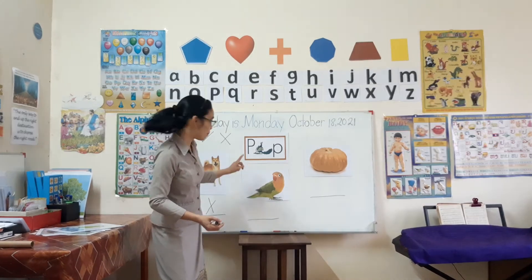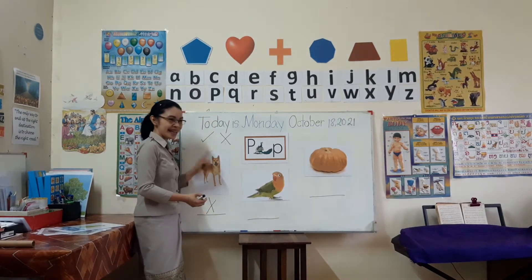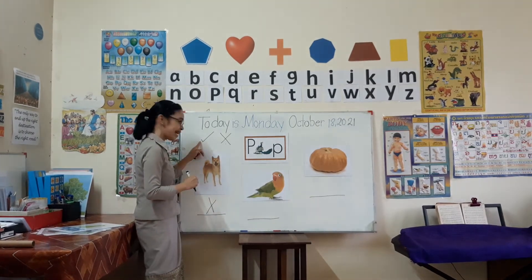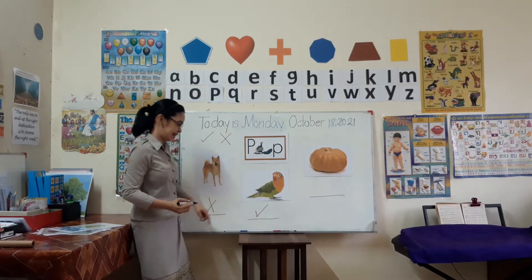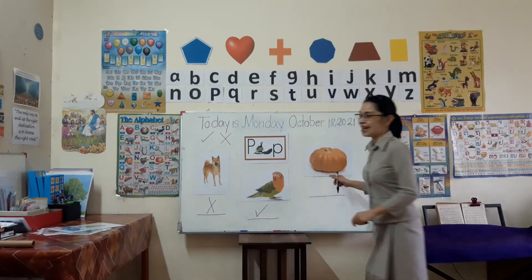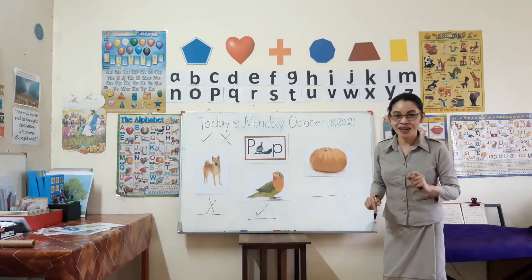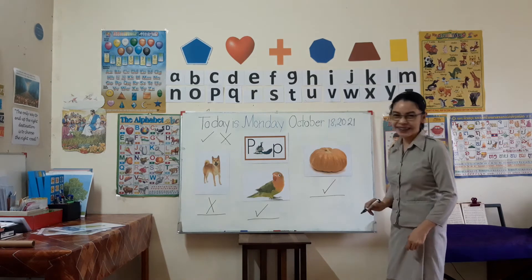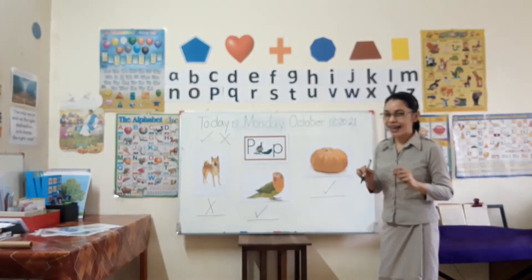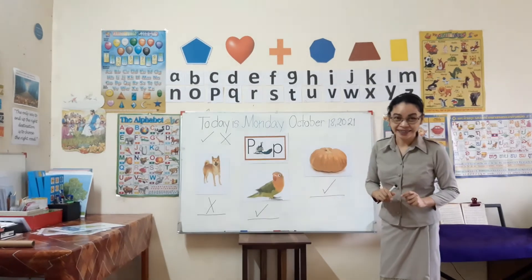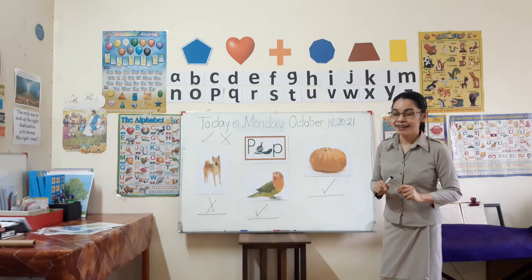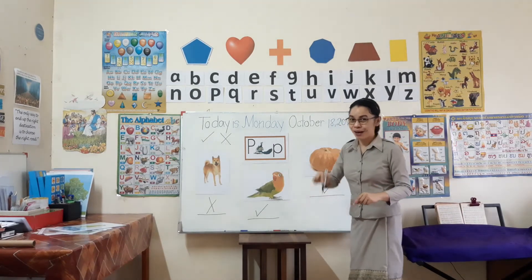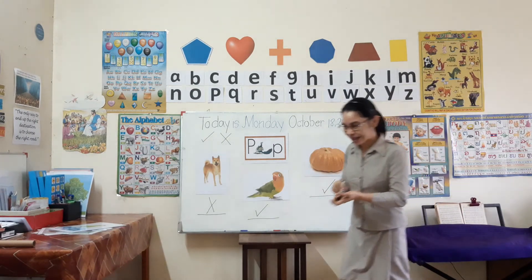Parrot — do you hear the P sound? Yes! So you write the check. And this one: pumpkin. Pumpkin — do you hear the P sound? Yes, so write check. If you hear the P sound, write a check. If you don't hear the P sound, write an X. Now let's go to our activity.